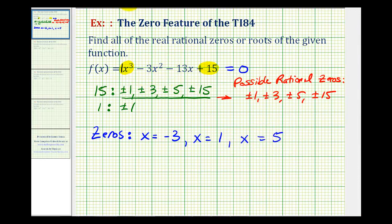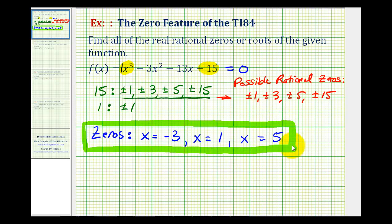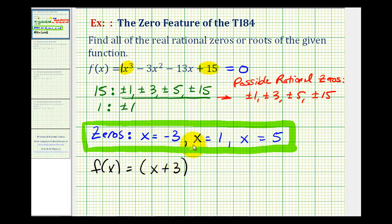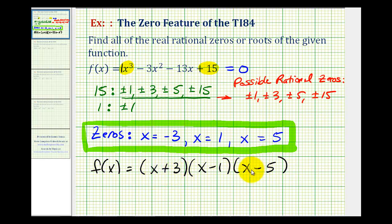So all three of the zeros are real and rational, and we found all of them using the TI-84 graphing calculator. Now there is one more connection I'd like to make. Having the zeros of this function also gives us information about the factors of the original function. If x equals negative three is a zero, then x plus three must be a factor. If x equals one is a zero, then x minus one must be a factor — notice if we place one in, this equals zero. And if x equals five is a zero, then x minus five must also be a factor. If we multiplied these together, we'd have a leading term of x cubed, and multiplying all out would give us the original function.